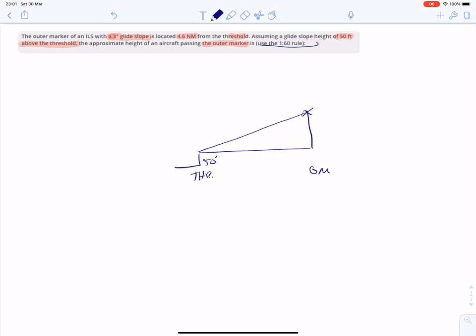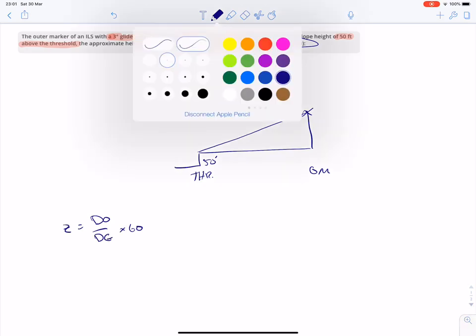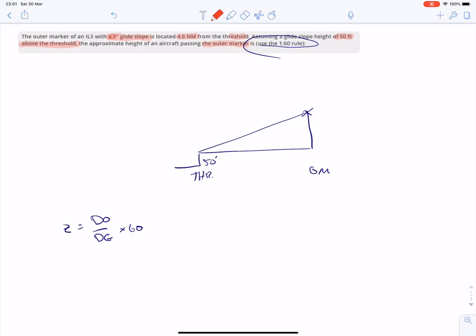Here it says you should use the 1 in 60 rule. So the 1 in 60 rule is z is equal to distance off divided by distance gone, multiplied by 60. And what we have in the example, we have a three-degree glide slope. So that would be the z, three-degree glide slope.